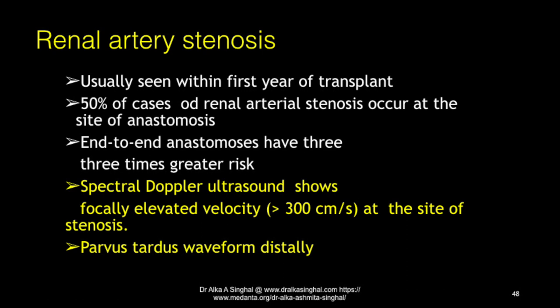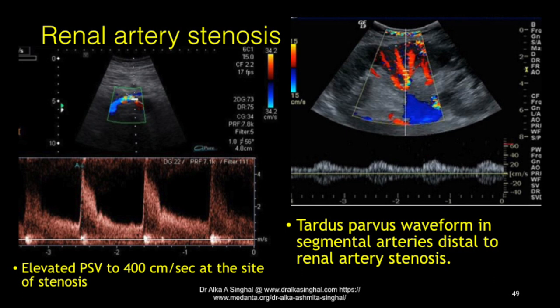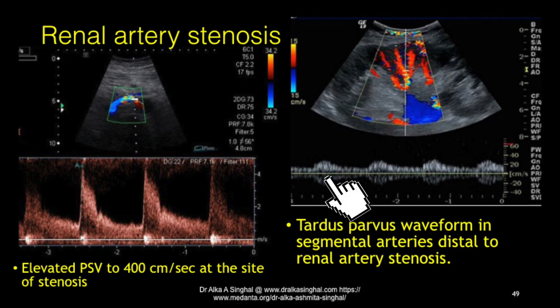Renal artery stenosis: there is a short segment from the anastomotic site to where the renal artery enters the kidney. Renal artery stenosis can be at the site of anastomosis, before it, or after it — with 50% of cases seen at the anastomotic site. End-to-end anastomosis has three times greater risk of renal arterial stenosis. Spectral Doppler shows focal elevation of velocities at the site and a parvus tardus waveform in the distal part beyond. A sample case shows peak systolic velocities of about 400 cm/s, and the segmental arteries in the renal parenchyma show a parvus tardus waveform.